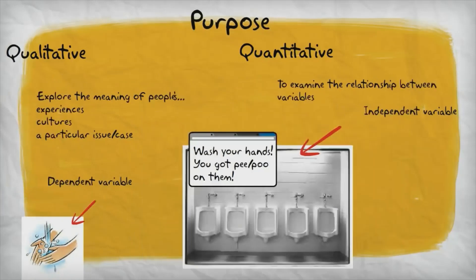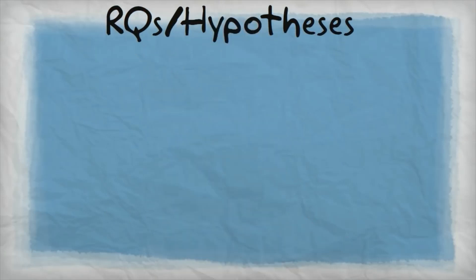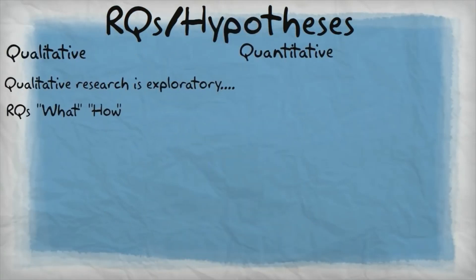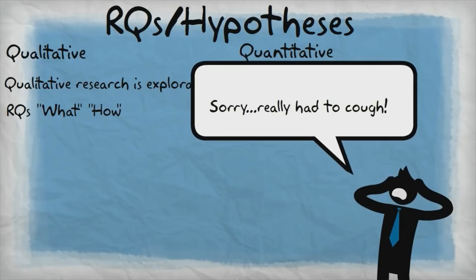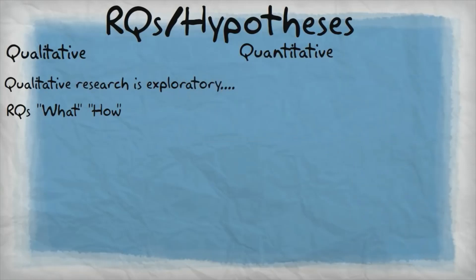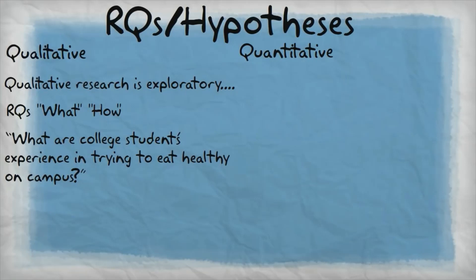Let's talk about research questions. Since qualitative research is exploratory in nature, qualitative research questions usually start with the words what or how, since these words imply discovery or exploration. For example, a qualitative research question could be, what are college students' experience in trying to eat healthy on campus? Or, how do college students celebrate the subcultural holiday of 420?